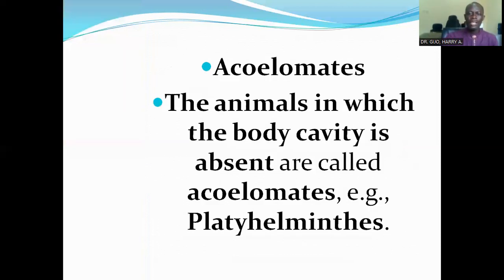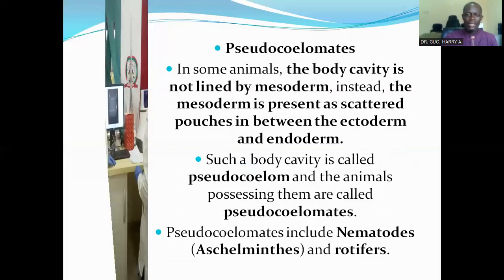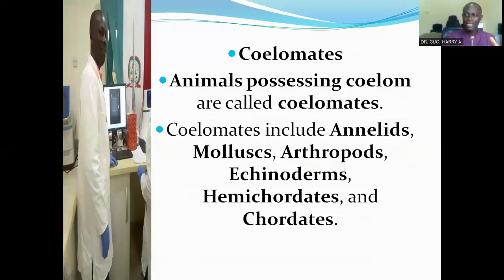Acoelomates: animals in which the body cavity is absent are called acoelomates. Typical examples are the flatworms — animals in the phylum Platyhelminthes are acoelomates and do not have a body cavity. Then the pseudocoelomates: in some animals, the body cavity is not lined by mesoderm; instead, the mesoderm is present as scattered particles in between the ectoderm and the endoderm. Such a body cavity is called pseudocoelom, and the animals possessing them are called pseudocoelomates. Pseudocoelomates include nematodes and rotifers.